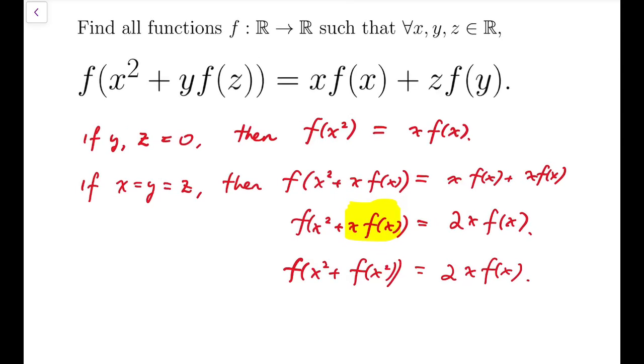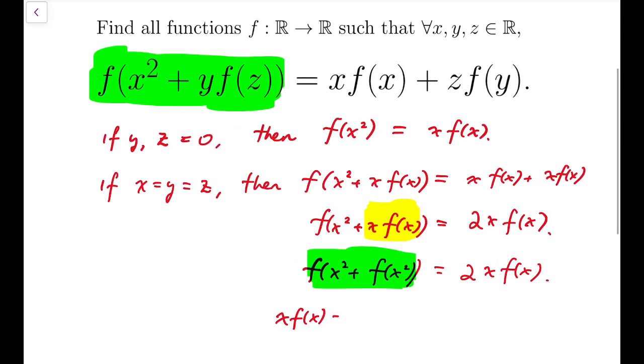And here comes the magic. The magic is that I can actually replace, I can actually refer to these two expressions. We compare them, and we can see that I can treat z to be x squared and y to be 1, and use the original equation to rewrite left-hand side to be x times f of x plus x squared times f of 1. And that would equal to 2x f of x. This is the magic.